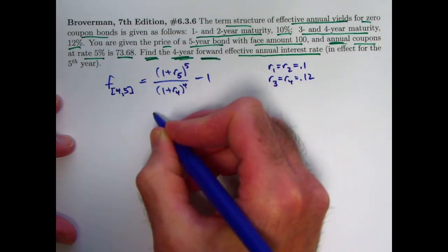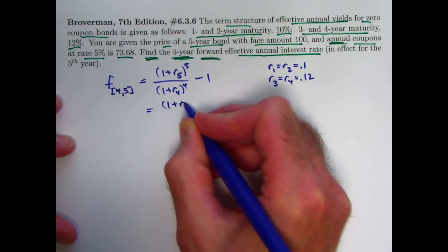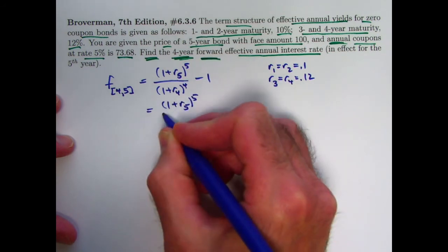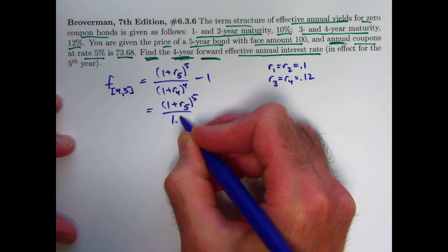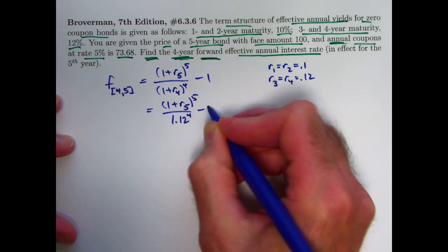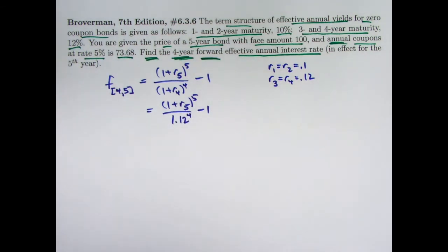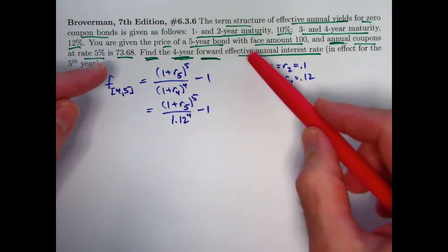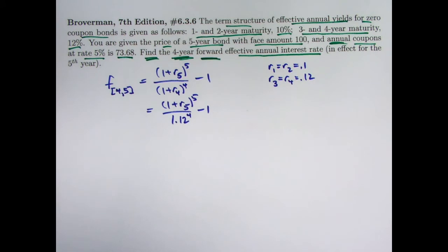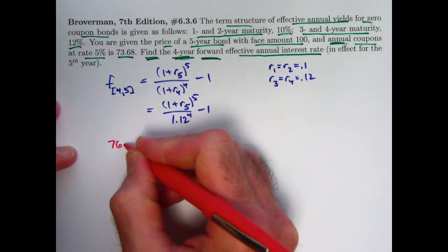I can go ahead and plug in 0.12 right away if I like. And so now you see that all that is left is to find R5 and then use this formula. So evidently, you think about it for a second, you realize evidently the bond that does have coupons must be what we need to use to find R5.